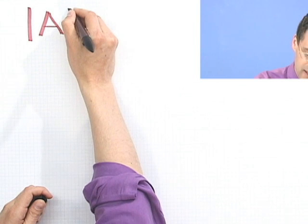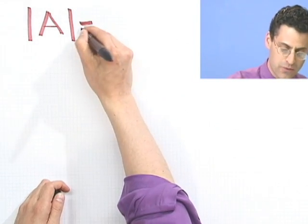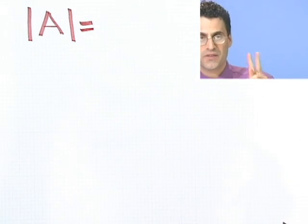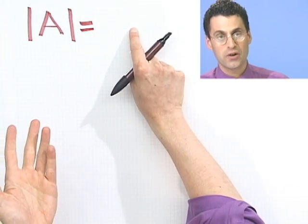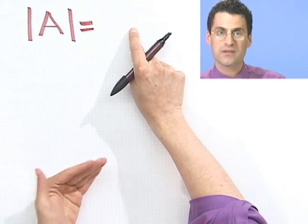let me tell you that if I write absolute value of A, what does that equal? Well, there are two possibilities, right? It either equals A if A is positive, or it could be negative A if A were negative.